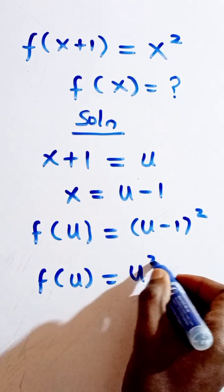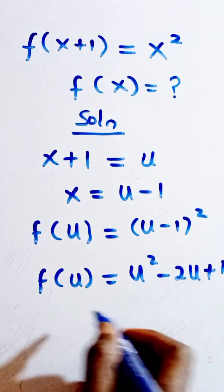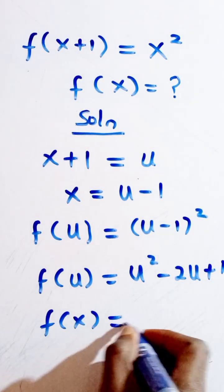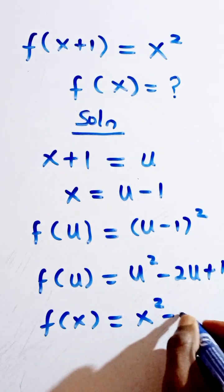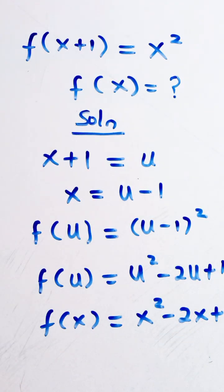Expand this, we have u² - 2u + 1. Change u to x. We have f(x) = x² - 2x + 1. And we are done.